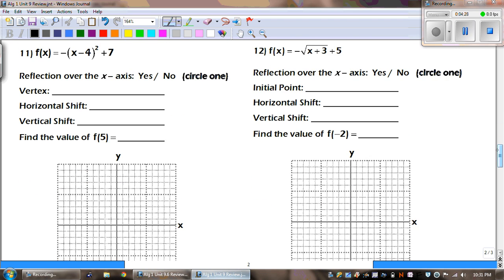All right, number 11. What type of graph is this? This time we're going to be graphing a quadratic. All right, first question. Is there a reflection? What's that in front? Yeah, that's a negative. Okay, so that means there's reflection here.